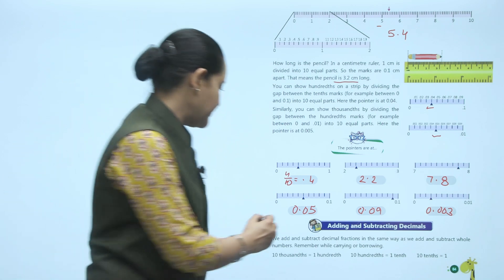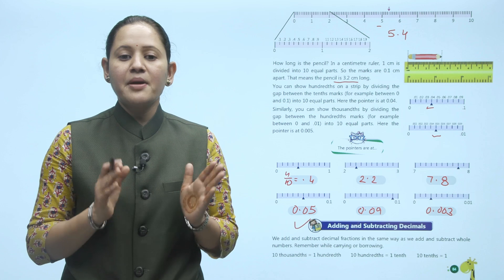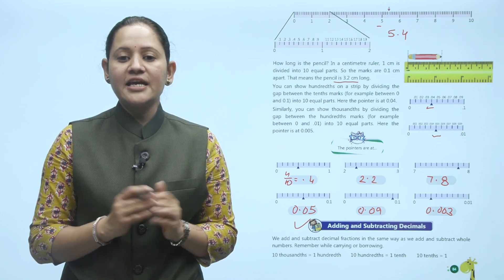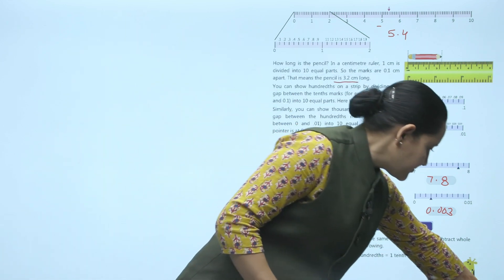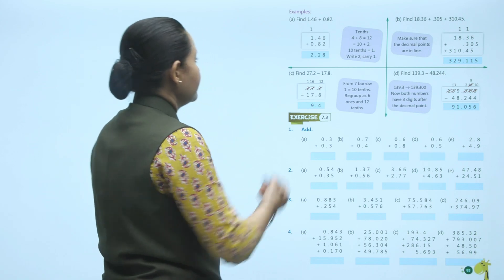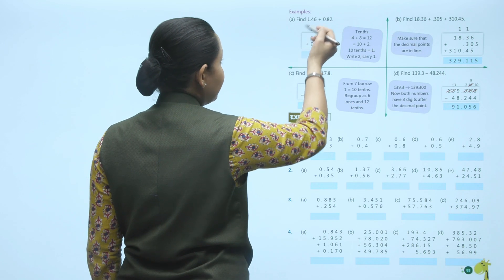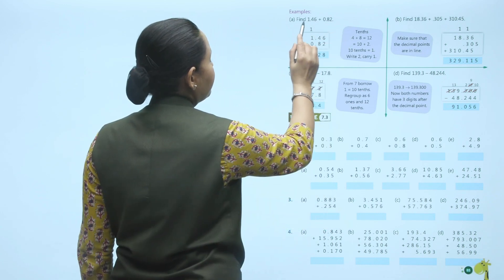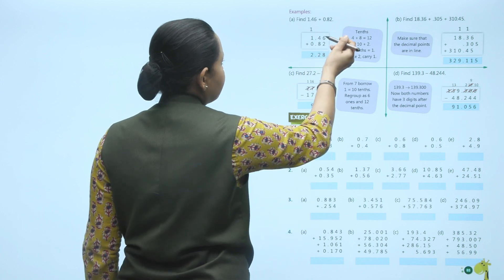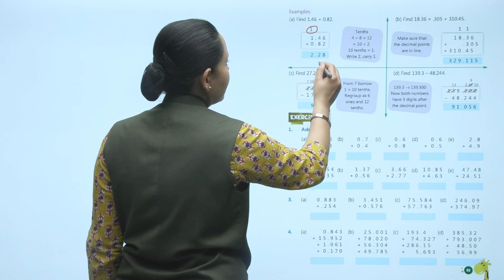Next is adding and subtracting decimals. We add and subtract decimal fractions the same way as whole numbers. Remember: ten thousandths equal one hundredth, ten hundredths equal one tenth, and ten tenths equal one. Example: find 1.46 plus 0.82. Write one below the other with decimals aligned. 6 plus 2 equals 8. 4 plus 8 equals 12 — write 2, carry 1. 1 plus 0 plus 1 equals 2. Answer: 2.28.